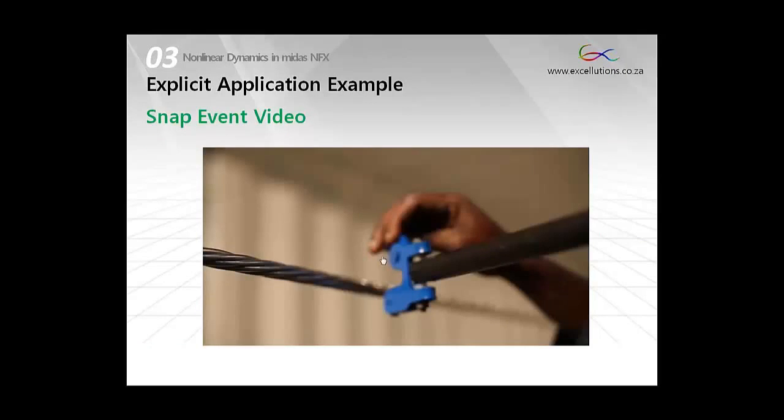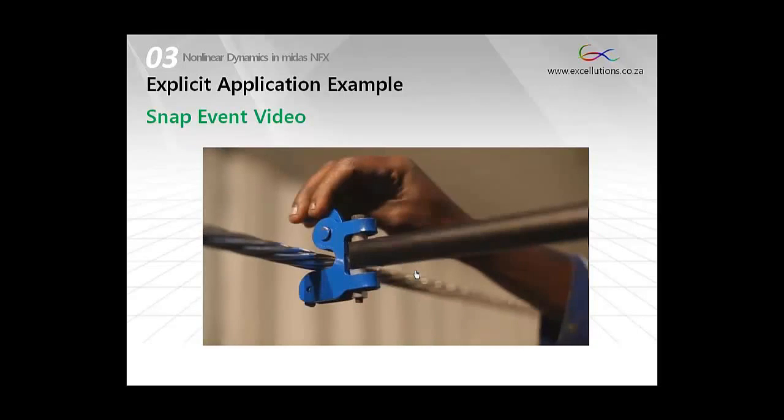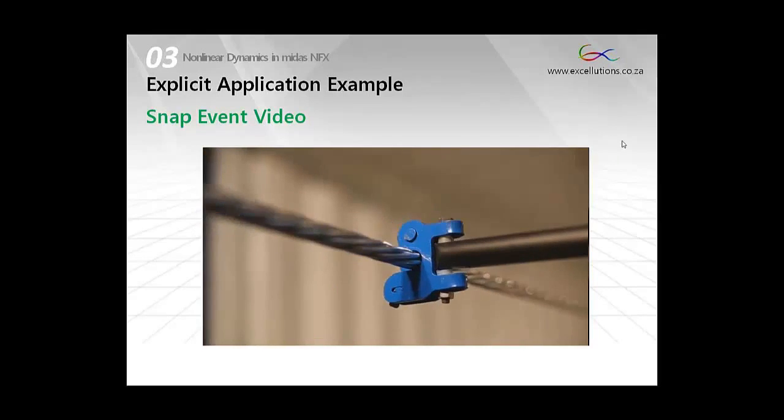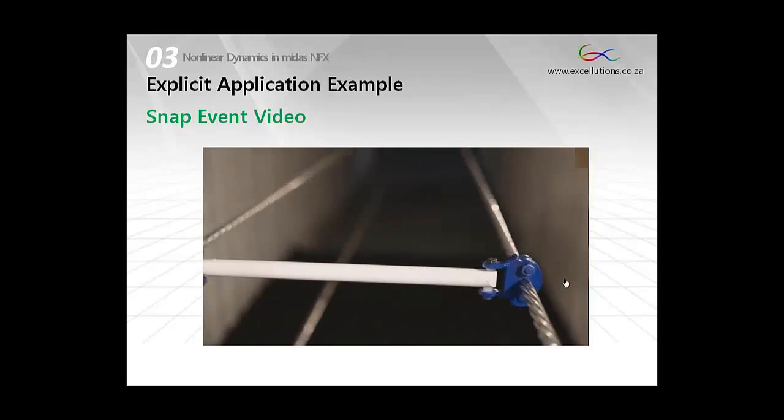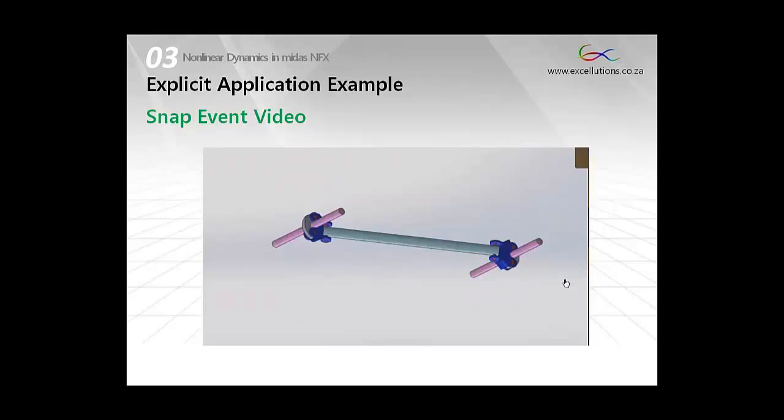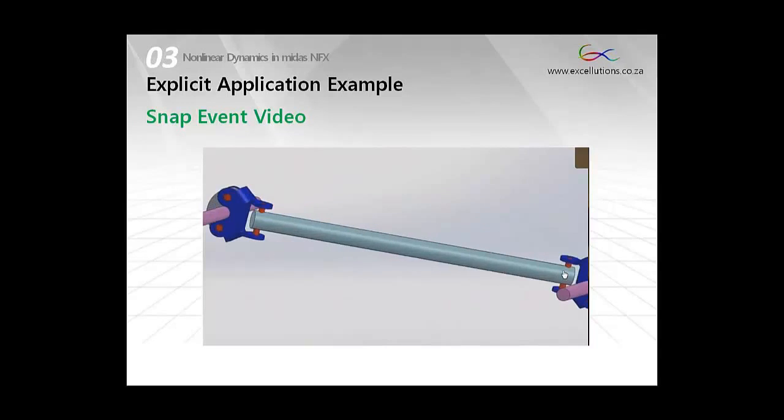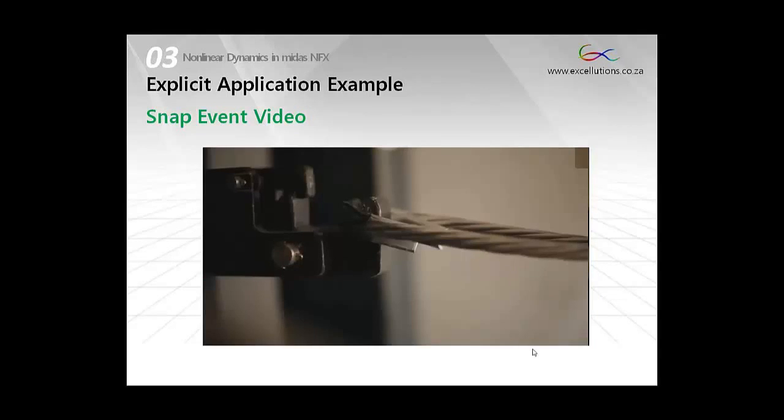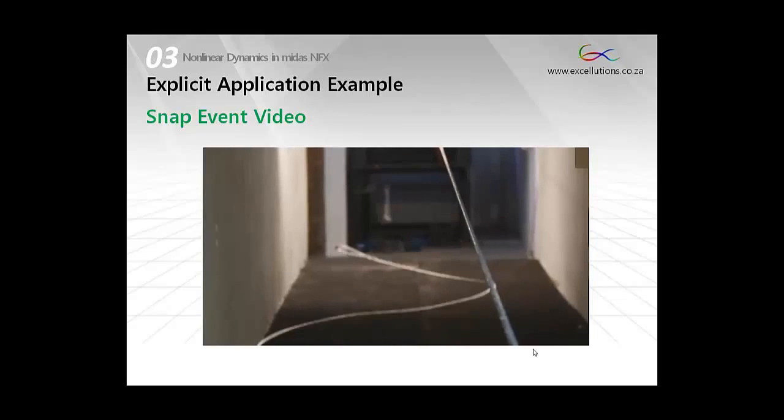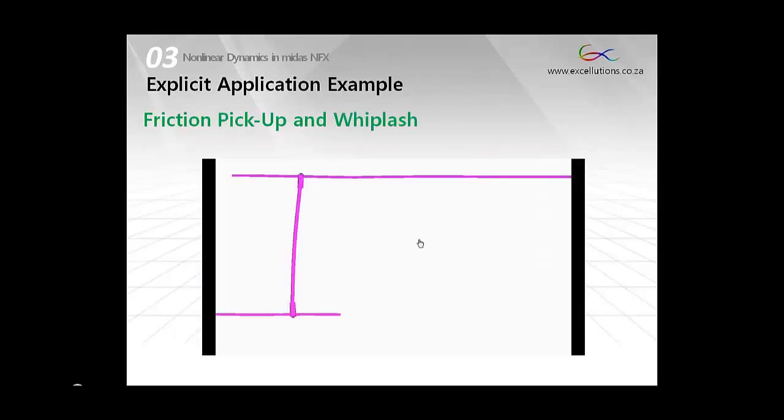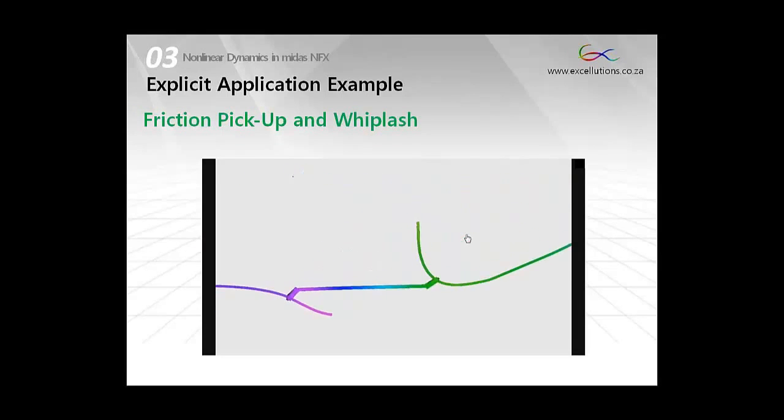The next video clip shows the simplicity of the system as well as the recoil event when the cable severs. This is the results from the explicit analysis where you can see that the cable picks up the clamp immediately. So there was indeed sufficient friction. And this last clip shows the deformation of the bracket and the severe whiplash.